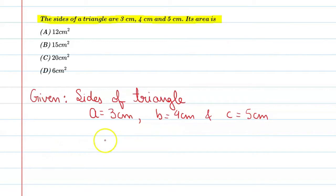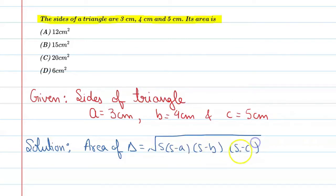Now let's start the area of a triangle. Let's start the solution. Area of triangle is equal to under root S, S minus A, S minus B and S minus C. Alright.